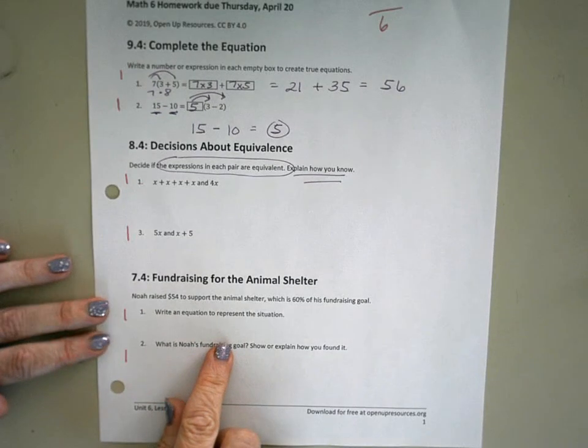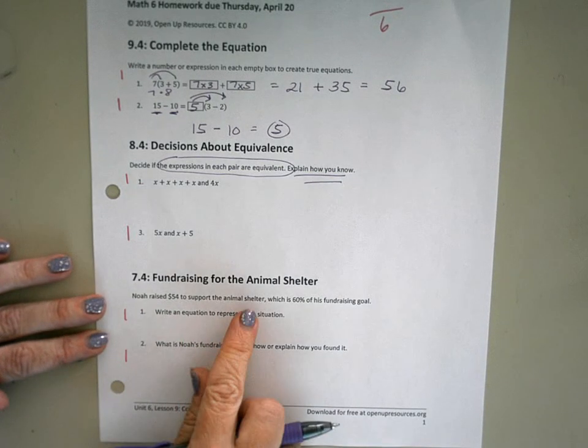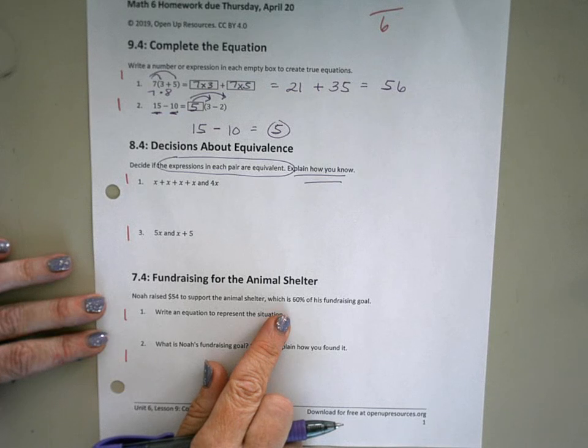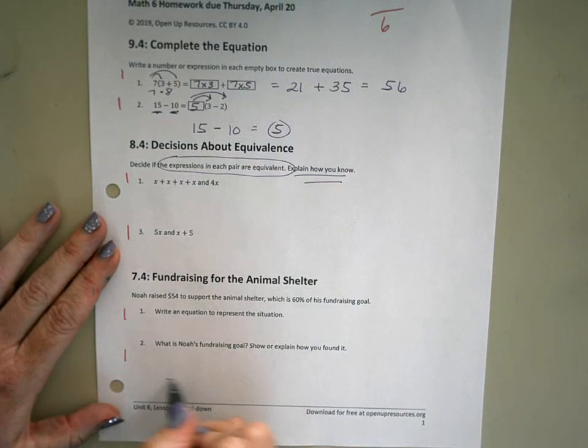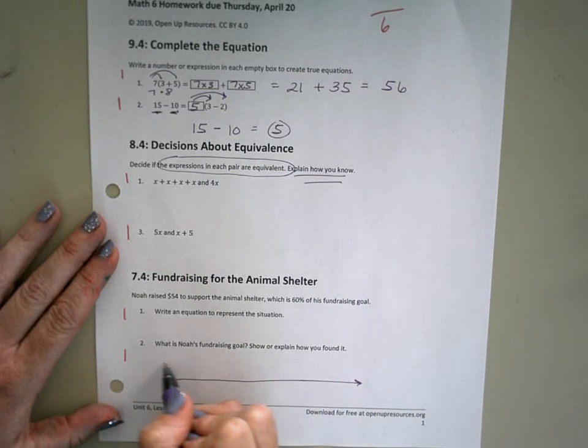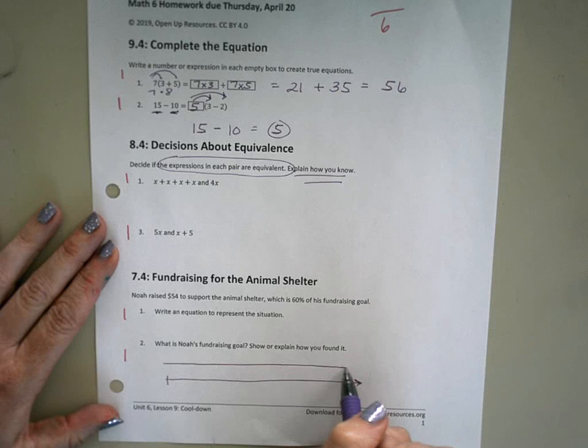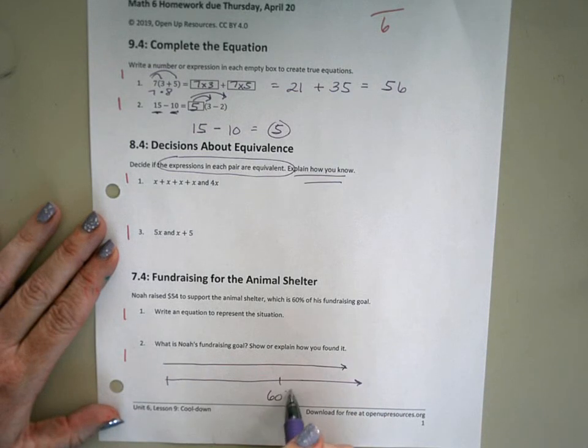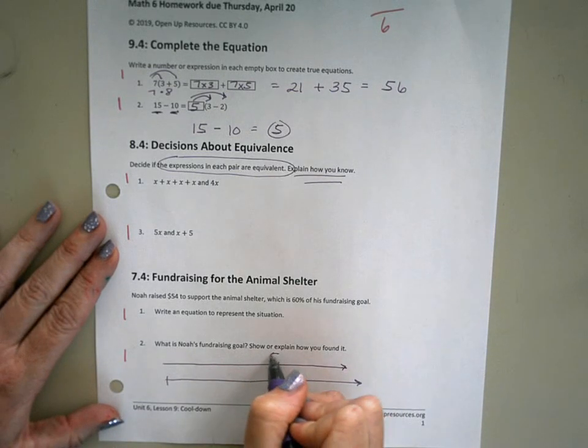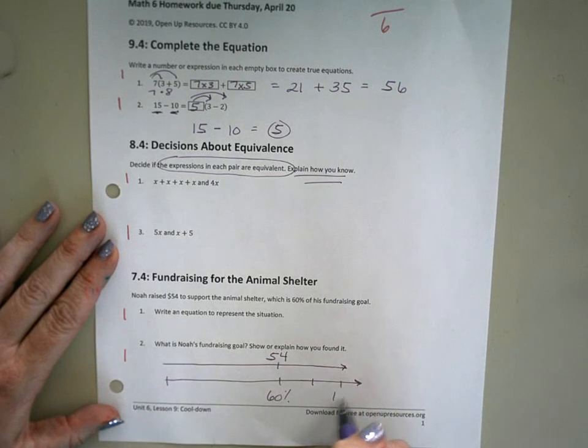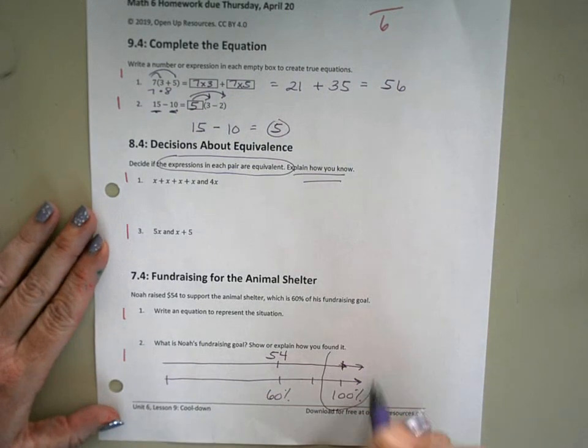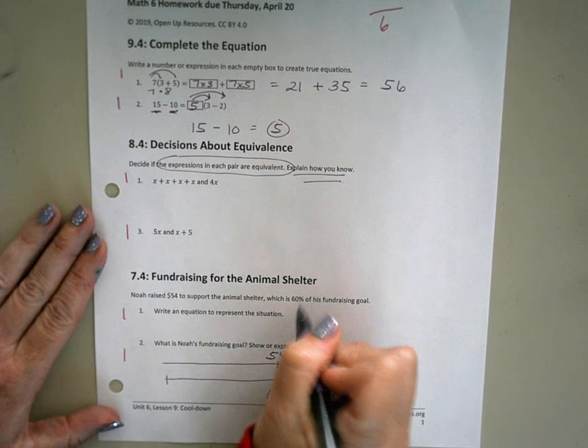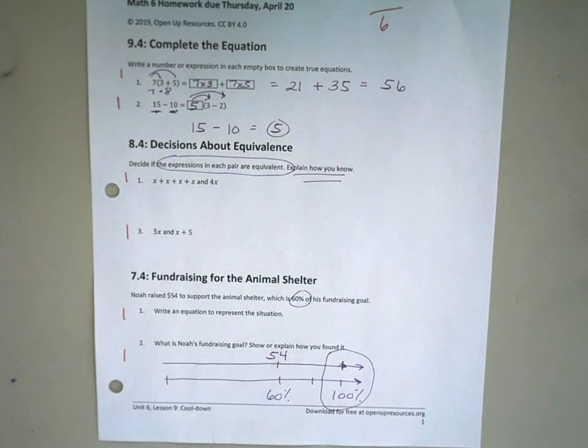And then for the last one, Noah raised $54 to support the animal shelter, which is 60% of his goal. What is the actual goal? So when you're doing this, you may want to consider making a double number line. I know that 60% of the goal is $54, and I'm going to want to find 100%. So there's a little sneak peek. And, of course, I'll also want you to write that equation, making sure you show me how to write 60% as either a decimal or a fraction.